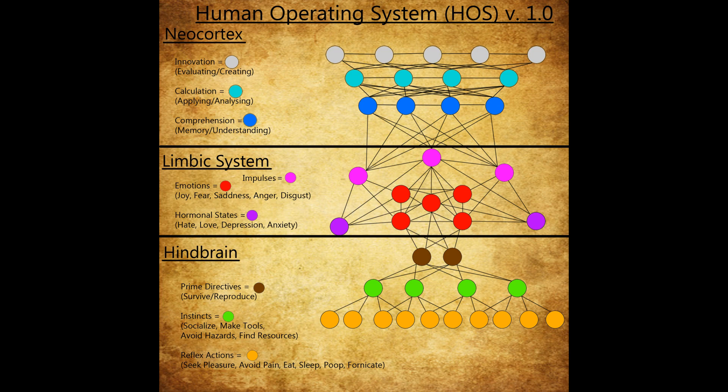Now what does this have to do with the HOS? Well, you'll notice in the lower hindbrain section, in the parentheses below the green dot labeled instincts, the word socialize, and in that lies a critical oversight on the part of my younger self. You see, I used to think that our advanced intelligence was the source of existential dread, but then I remembered this quote from Eleanor Roosevelt.